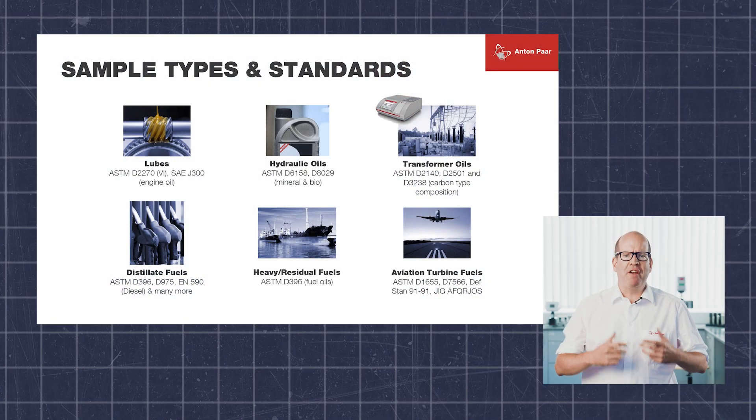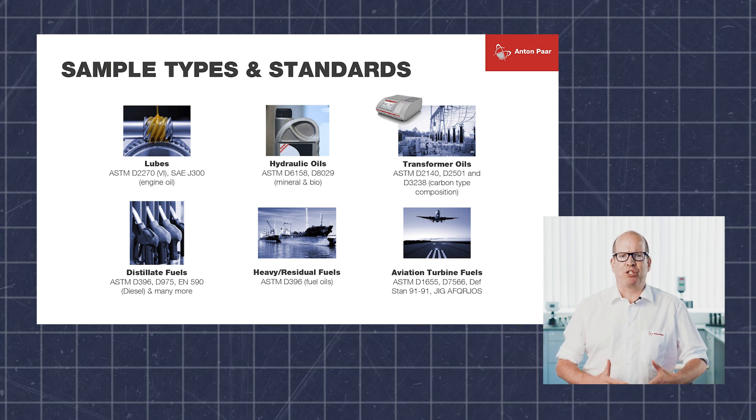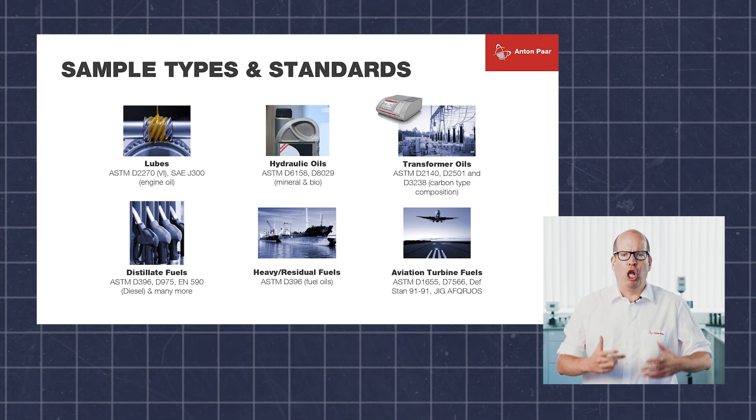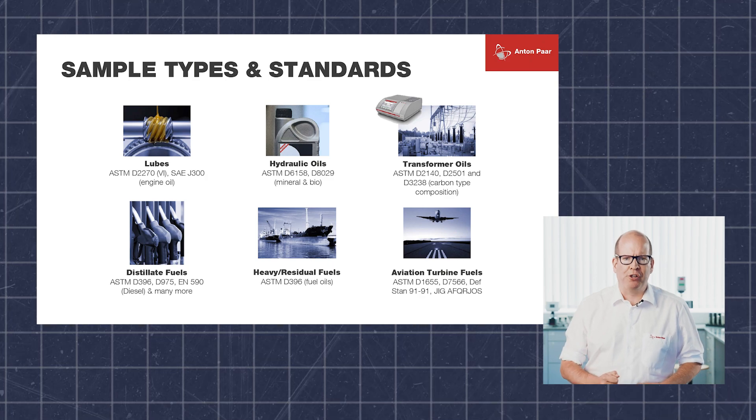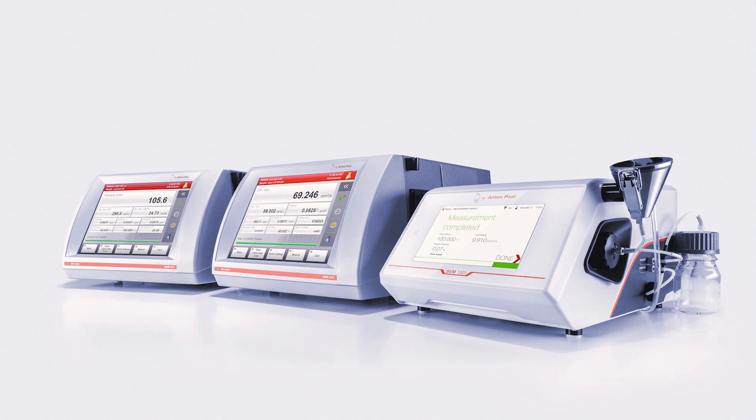You may be wondering what kind of samples D7042 can be used on. It's a very well accepted standard that can determine viscosity in more than 50 international standards, including specifications for samples like diesel fuel, aviation fuel, lubricants, fuel oils, and many more. So if you're looking to determine the kinematic viscosity of your sample, Anton Parr's SVM is the obvious choice. See you next time.